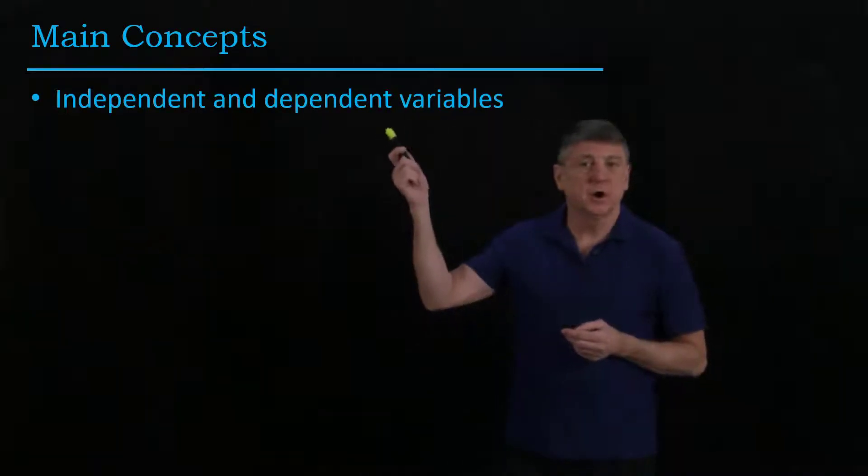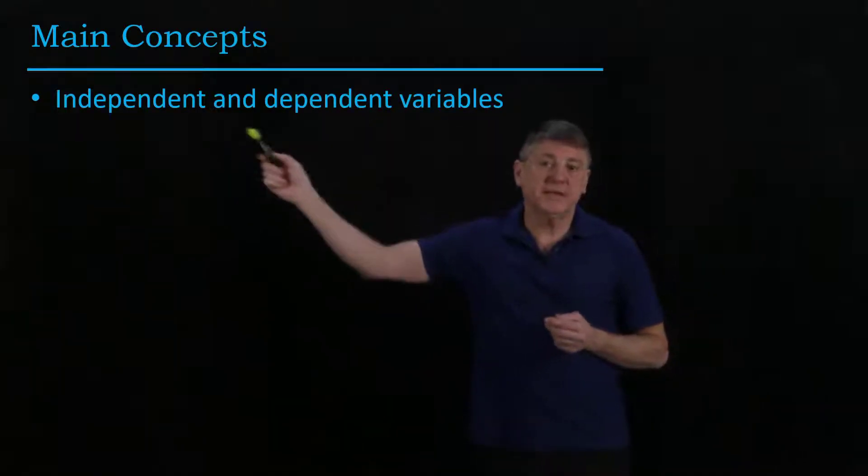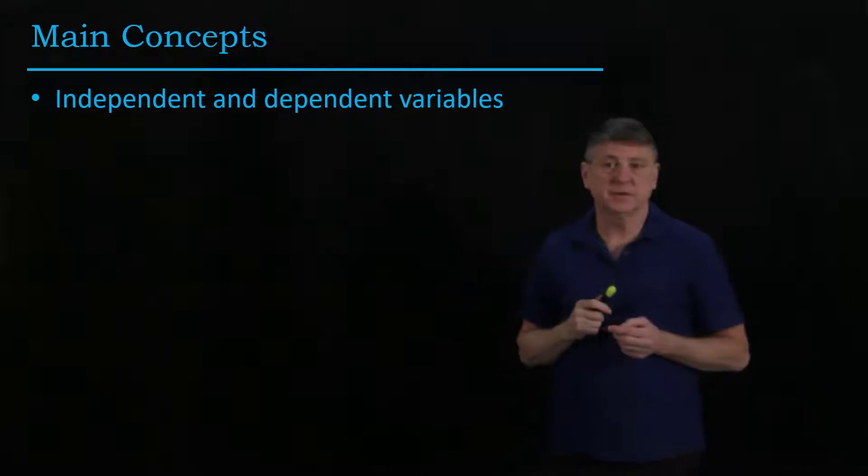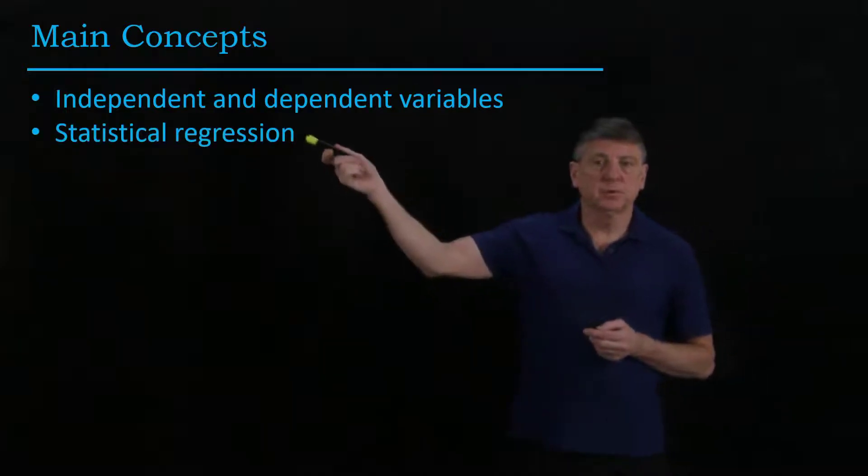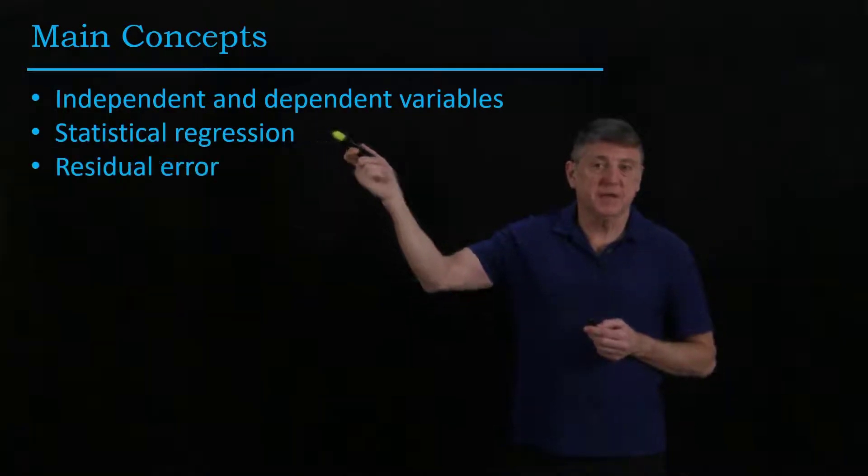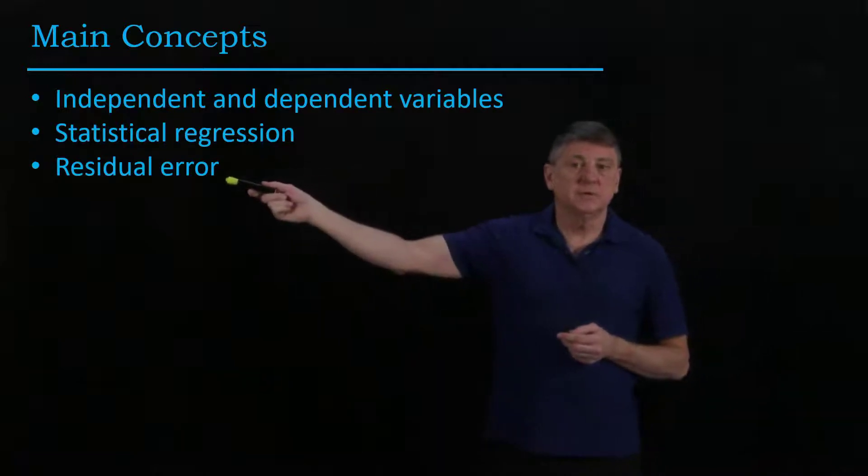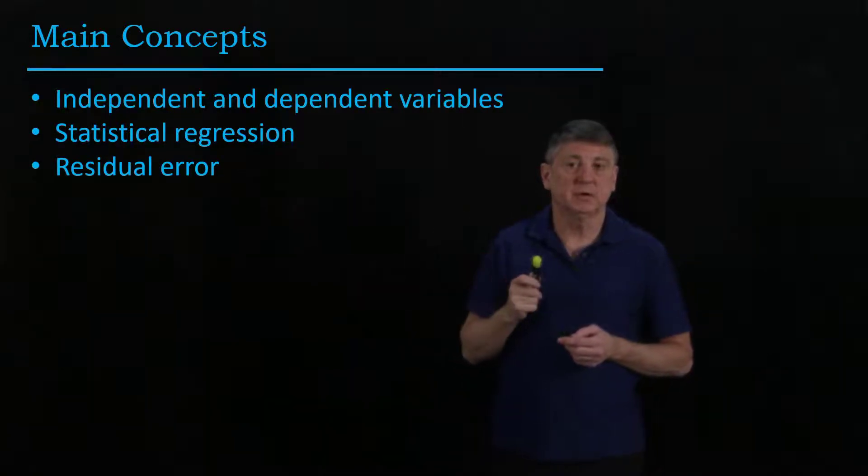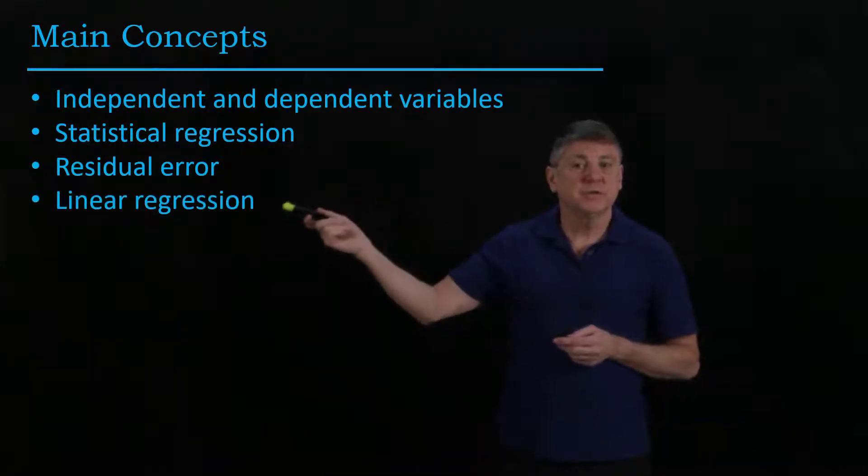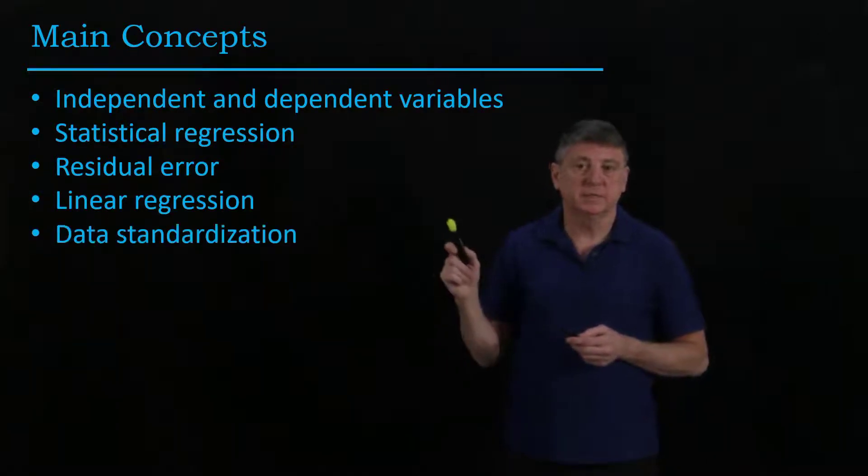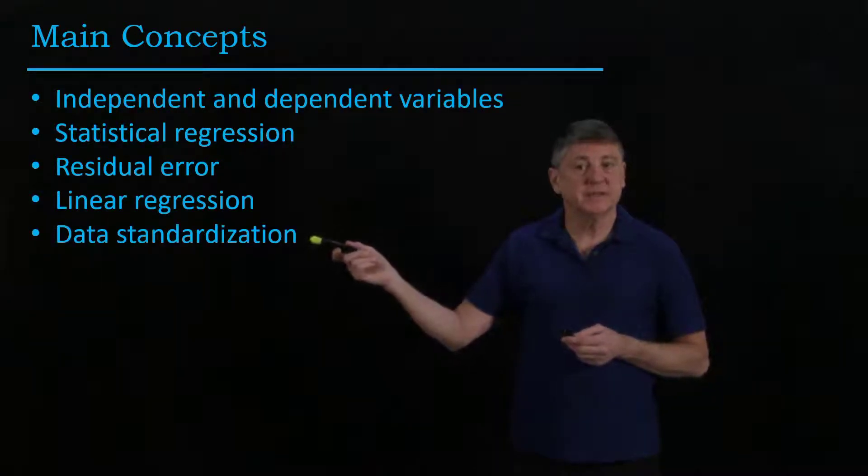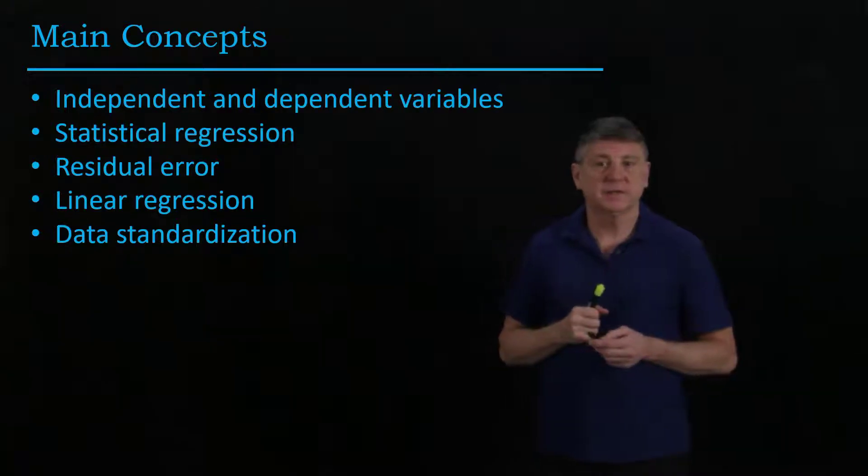The main concepts for this lecture are: we'll draw a distinction between independent and dependent variables in our data, we'll explore what statistical regression means, and we'll introduce the definition of residual error. Having these, we'll see what linear regression looks like and we'll explore how data standardization interacts with linear regression.